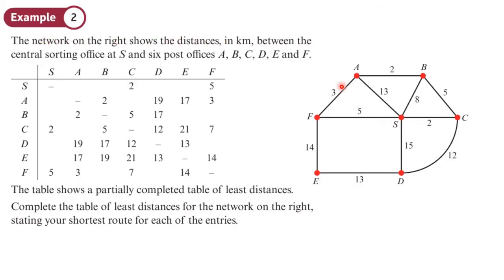This network shows the distances in kilometres between the central sorting office S and six post offices A, B, C, D, E, F. The table shows a partially completed table of least distances — we need to complete it, stating the shortest route for each entry. Since this is not a directed network, we can fill in rows and columns simultaneously. Going from S to A: we have 13, 10, and 8 as options, so the least distance is 8. Then from S to B: 8 this way, 7 this way — so 7 is the least distance.